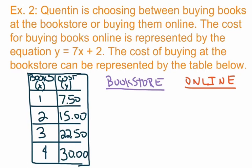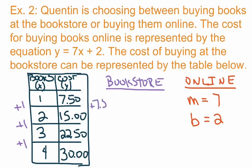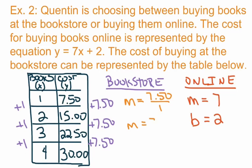It's y equals mx plus b, so for buying books online, the value for m is 7 and the value for b is 2. For buying at the bookstore, we need to find the rate of change from the table. The x values go up by 1 and the cost goes up by $7.50. So m equals delta y over delta x equals 7.50 over 1, giving a slope of 7.50.